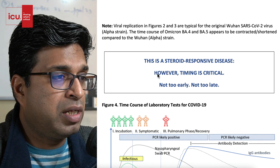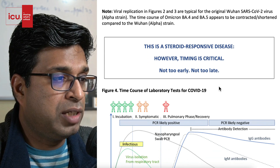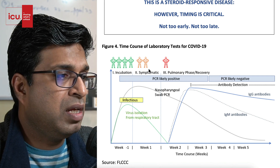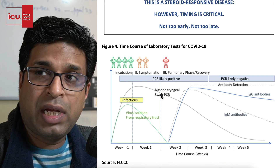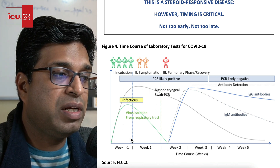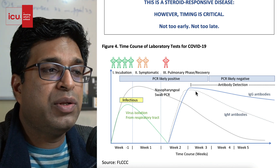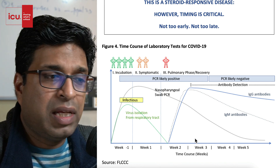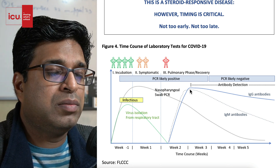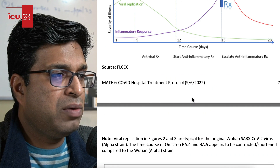This is a very useful graph. Timing of steroids is critical — this is a steroid-responsive disease where timing must be not too early and not too late. The chances of getting an RT-PCR positive result are very high in the early stage where the virus is actively replicating. In late stages, the virus may be dead and you can get a false positive result, while antibodies will be most detectable. More detail is available in the FLCCC PDF linked below.